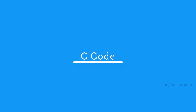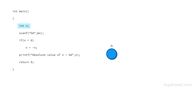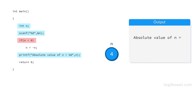Now let us see how to implement it in C language. In the main function, declare an integer variable n and read the number from the user using scanf and store it in n. Suppose the user entered the number 4 and it is stored in n. Check if n is less than 0 — but it is not. So print: the absolute value of n is 4, and the program returns 0.